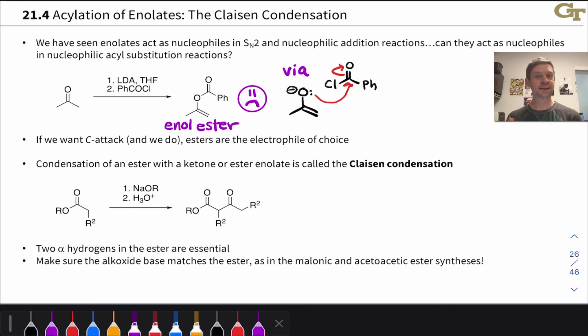If we want C attack, and we definitely do because we like making carbon-carbon bonds, and these structures we're going to generate are highly useful—in fact we've seen them previously in the acetoacetic ester synthesis—esters are the electrophile of choice. We have to dial back the reactivity of the electrophile a little bit and use an ester as the electrophilic side.